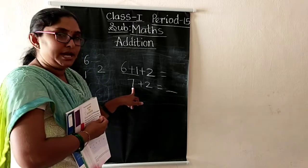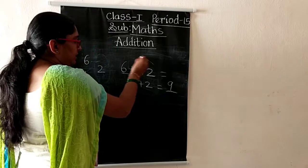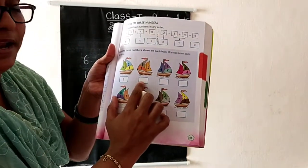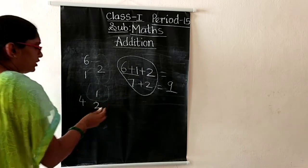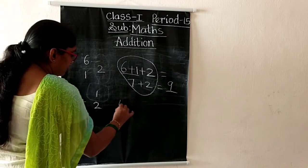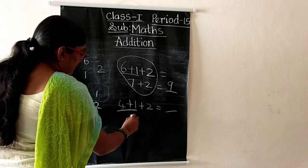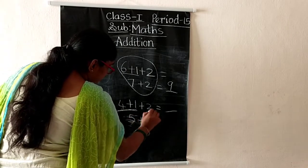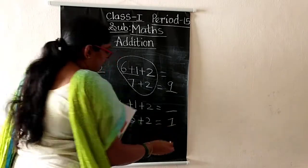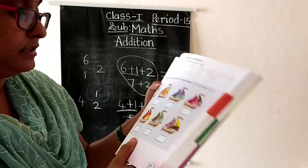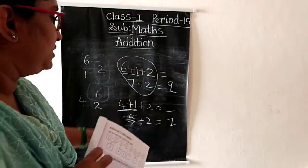Remaining number is two. Seven in the mind, take two fingers: seven after eight, nine. What is the answer? Nine. So you write nine here. Next: four, one, two. Write four plus one plus two. Four plus one equals five. Five in the mind, take two fingers: five after six, seven. Answer is seven, so write seven here.